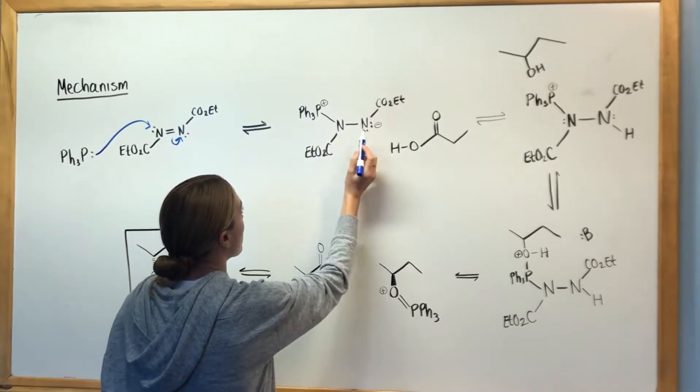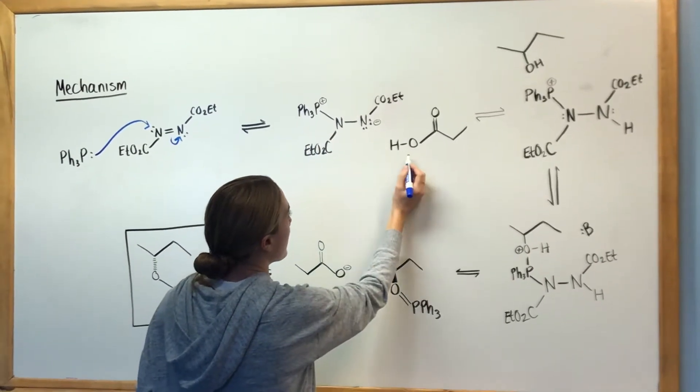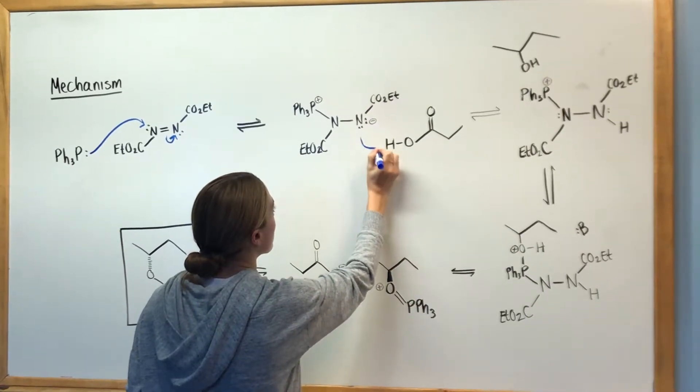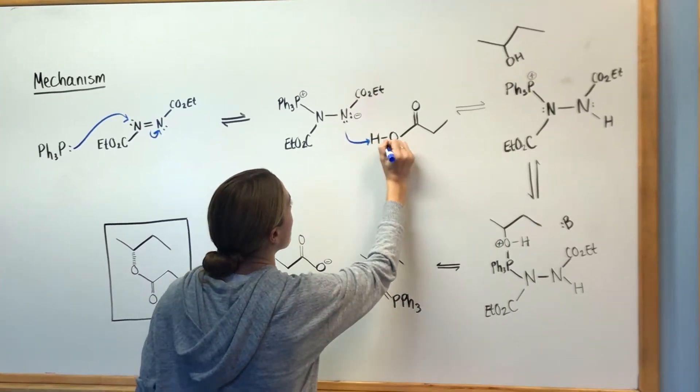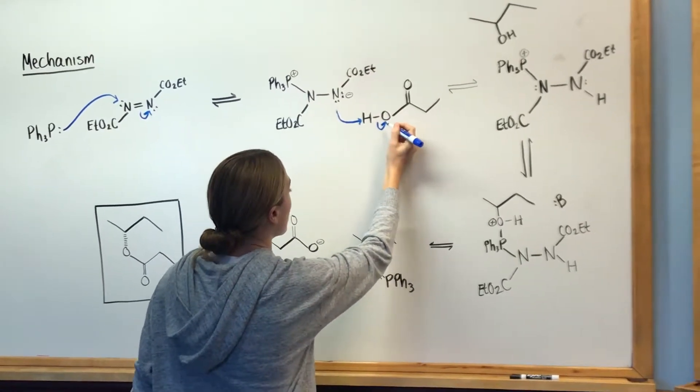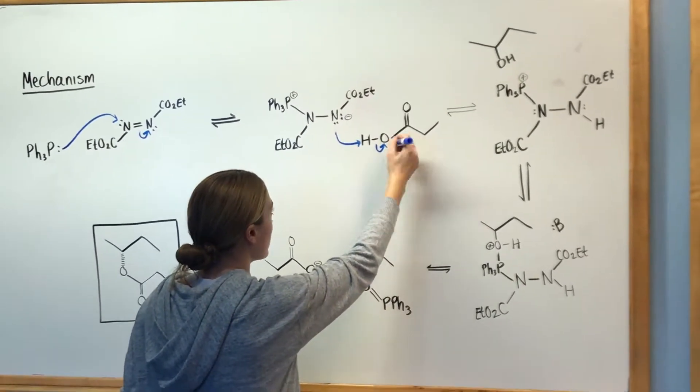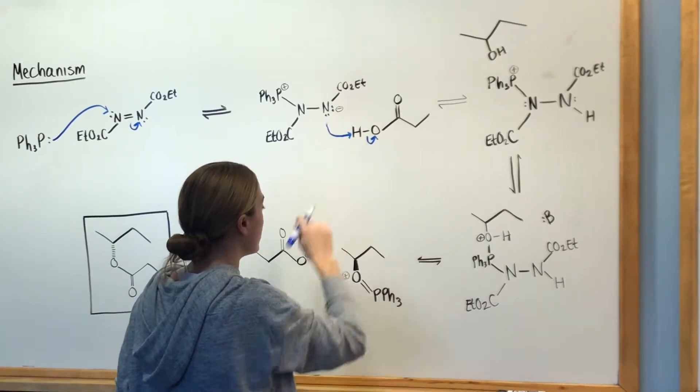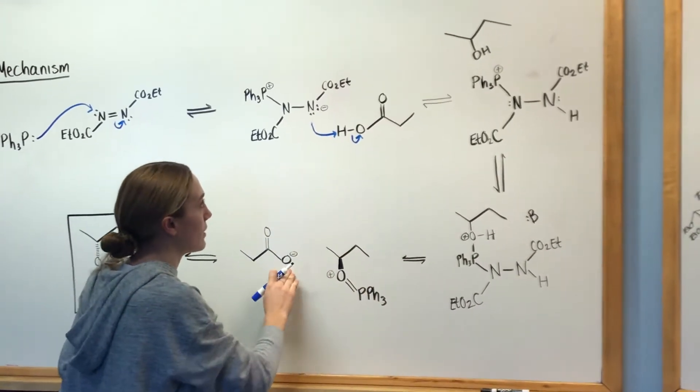This phosphorus is positive and the nitrogen is negative. Using one of the reactants, this nitrogen is going to come over and grab this proton, and this bond is going to go over onto the oxygen to make this negative. That molecule is going to come in later in this step where that negative oxygen is important.